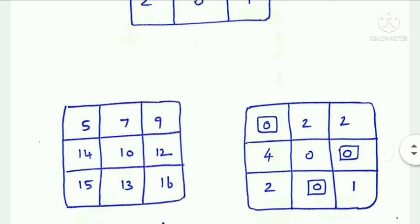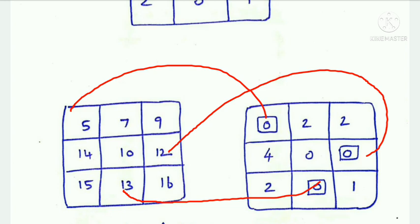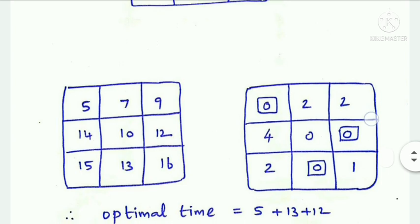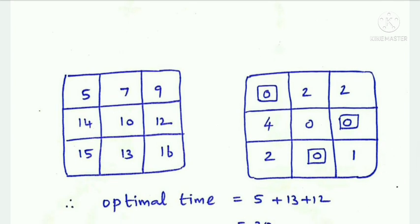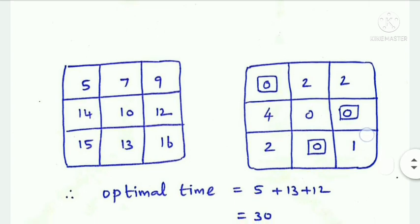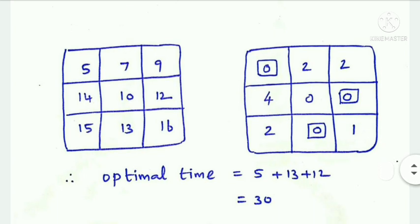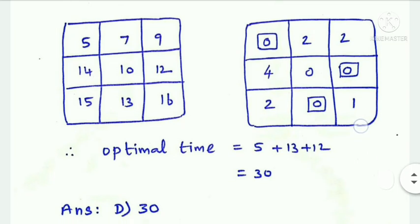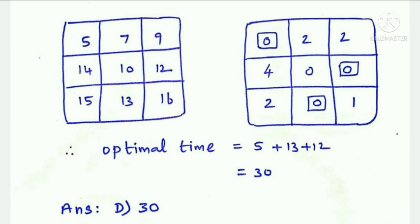The left side sum equals the right side sum. The corresponding given value in this position is 5. In the second row, the last value is 0 and the corresponding given sum is 12. The optimal time equals 5 plus 13 plus 12, which gives 30. Option D, the answer is 30.